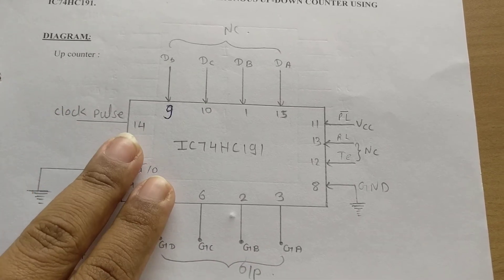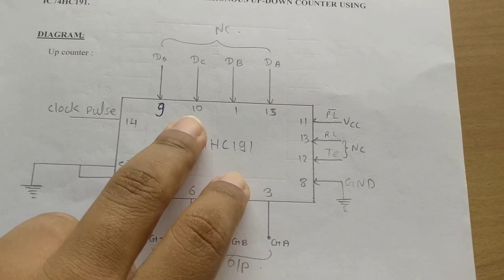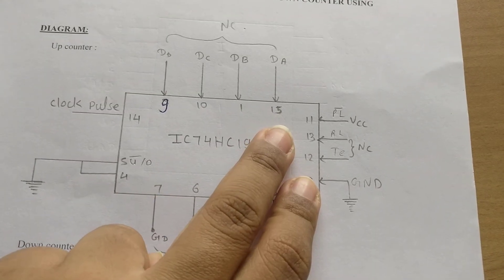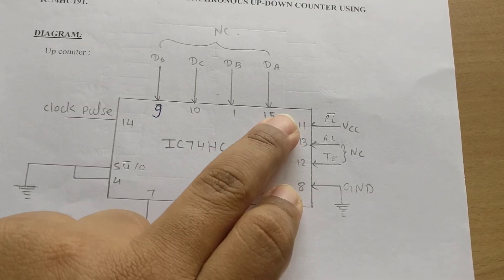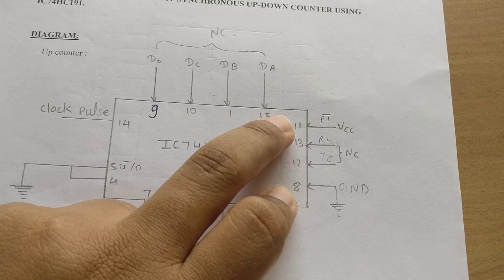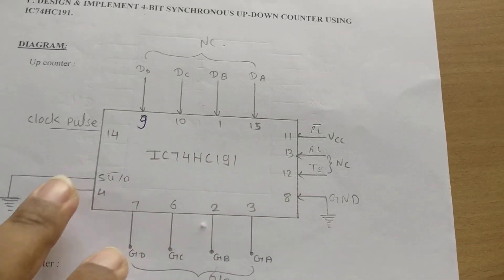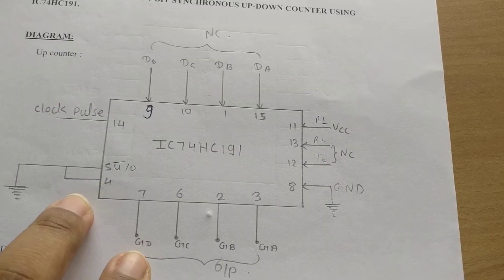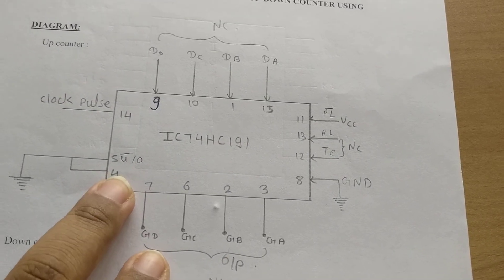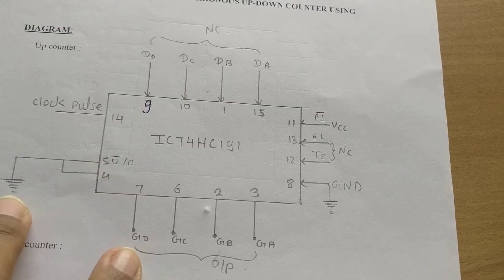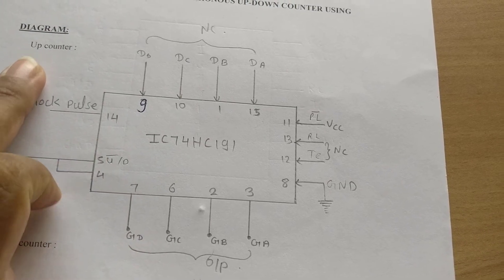The clock pulse is given at pin number 14. Pin numbers 9, 10, 1, and 15 are inputs which are not connected. Pin number 11, which is parallel load bar, is connected to VCC. Pins 12 and 13 are no connection. Pin 8 is connected to ground. Pin number 4 is connected to ground because it is enable bar.